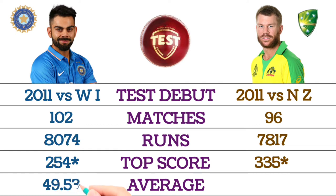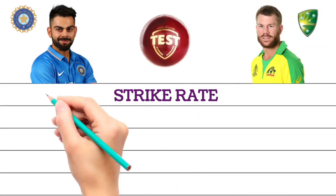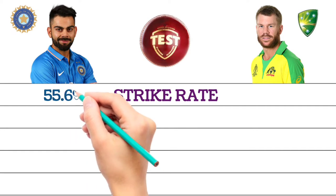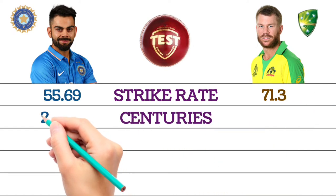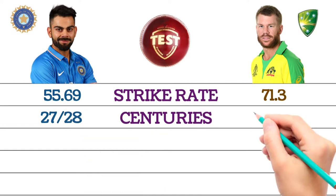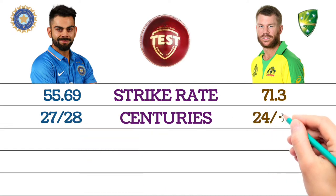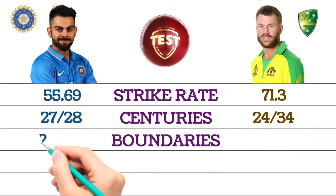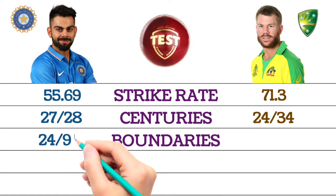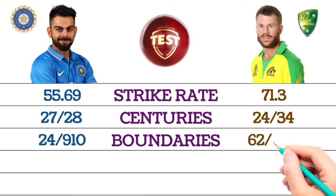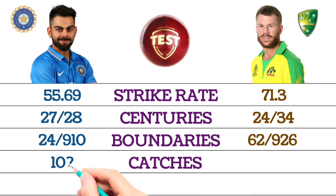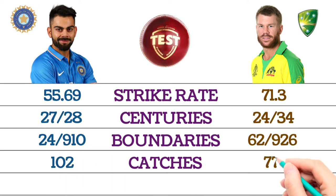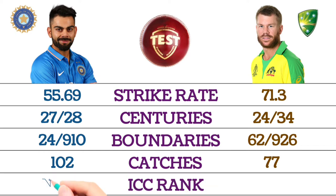Test average: Virat Kohli 49.53, David Warner 46.53. Strike rate: Virat Kohli 55.69, David Warner 71.3. Centuries: Virat Kohli 27 centuries and 28 half-centuries, David Warner 24 centuries and 34 half-centuries. Boundaries: Virat Kohli 24 sixes and 910 fours, David Warner 62 sixes and 926 fours. Catches: Virat Kohli 102, David Warner 77.